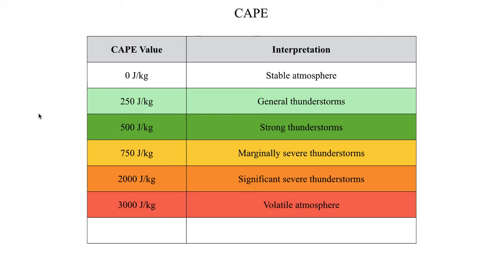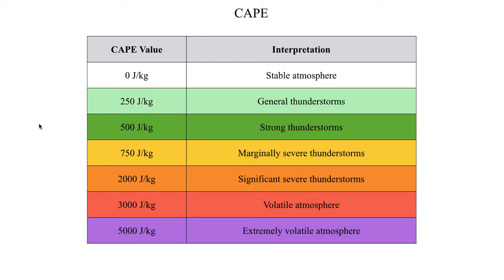Right around 3,000 joules per kilogram is when the weather service starts to consider that a volatile atmosphere — meaning something that develops in that environment could be a significant threat to life and property. Values over 3,000 are not especially common, and values over 5,000 are considerably rare. But when they are observed, you've got an extremely volatile atmosphere. As I like to put it: if you've got 5,000 joules per kilogram of CAPE, whatever goes up will go up very rapidly and very explosively. These are just general rules of thumb when making a forecast for thunderstorms or severe weather.